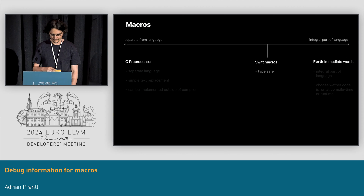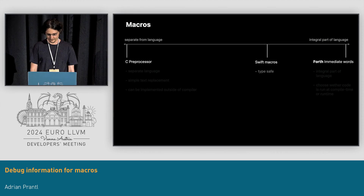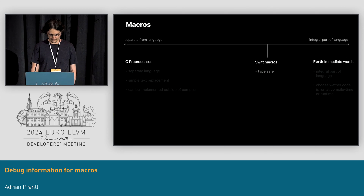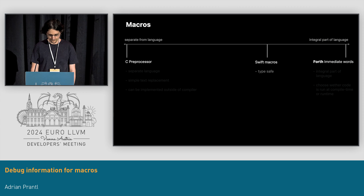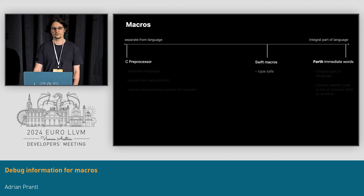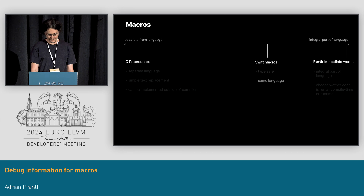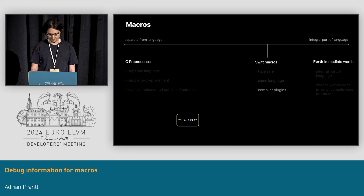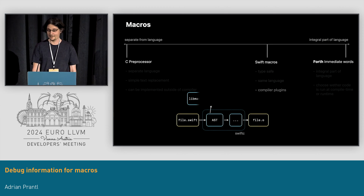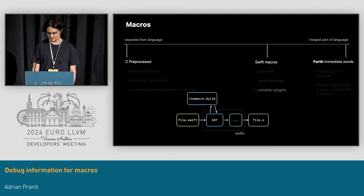Swift macros are the running example I'm going to use throughout this talk, and they're somewhere in the middle. Like C macros, they can be defined and expanded with parameters. But they're also very deeply integrated into the language's type system. They're meant to be implemented in Swift, but really they're compiler plugins. These compiler plugins take type-checked ASTs, or abstract syntax trees, as inputs and return new ASTs as outputs. We'll explore what all of this means later on.